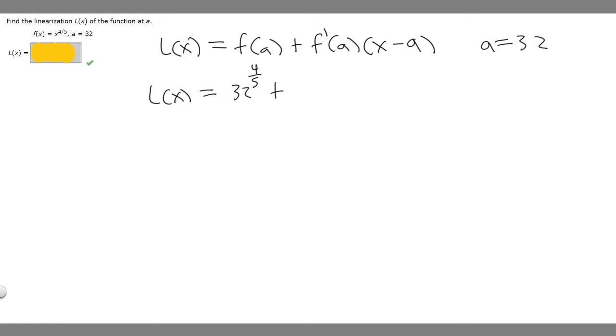And then it says the derivative of f of x with respect to a. So we've got to find the derivative with respect to x of x to the 4/5. Then we're going to plug in a. So this is going to become, we bring the 4/5 down. So 4/5 times x, then we minus 1, so it's going to become minus 1/5.